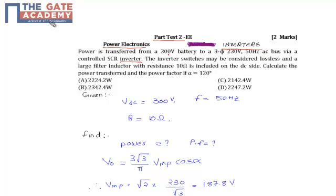So here, 300V DC supply is converting to 230V AC supply via controlled inverter. The inverter switches may be considered lossless,